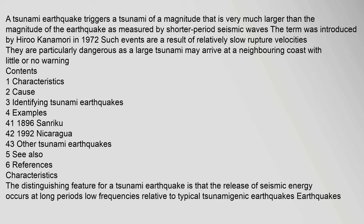A tsunami earthquake triggers a tsunami of a magnitude that is very much larger than the magnitude of the earthquake as measured by shorter period seismic waves. The term was introduced by Hiroo Kanamori in 1972. Such events are a result of relatively slow rupture velocities, and are particularly dangerous as a large tsunami may arrive at a neighboring coast with little or no warning.